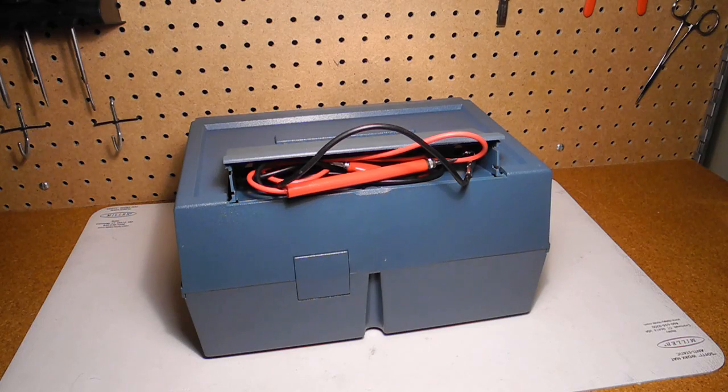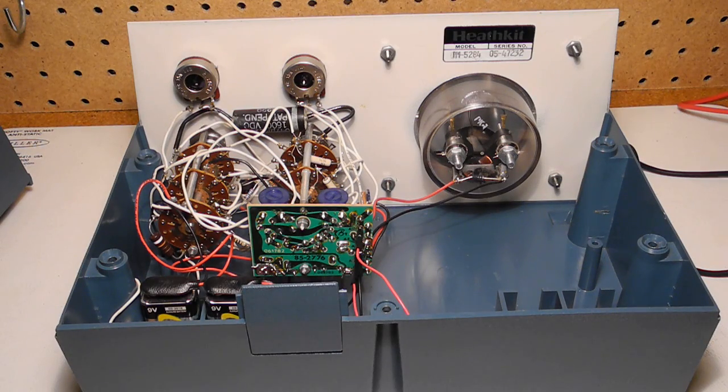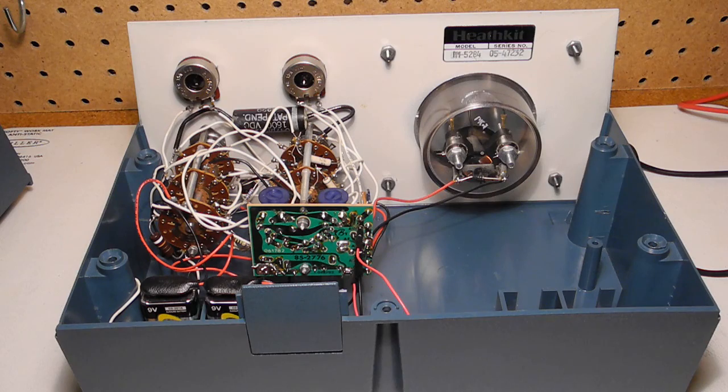When received, it still had two 9 volt batteries and one C cell inside. Two jumpers need to be installed for normal operation. As I was restoring it, the black jumper wire came off. With it back in place and with new batteries, all functions seem to be working.